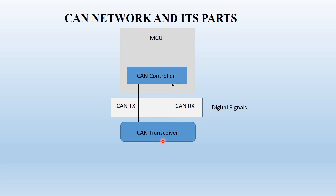In CAN, these digital signals are not used to communicate with another node. Instead, we use something called differential signals. Differential signals are used to communicate with another node because digital signals are good for very short range communication. Since CAN was introduced for automobiles, you have to cover larger distances — like 1 meter to 3 meters, or even more than 40 meters.